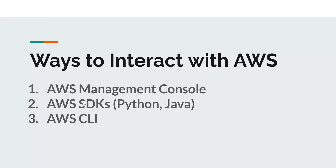The second way to interact with AWS services is using AWS SDKs, or Software Development Kits. AWS offers SDKs in languages like Python and Java. For Python, there is a module called boto3 — you can import that module and use the many methods it provides to interact with AWS services. This is a programmatic way to interact with AWS services and build your applications.